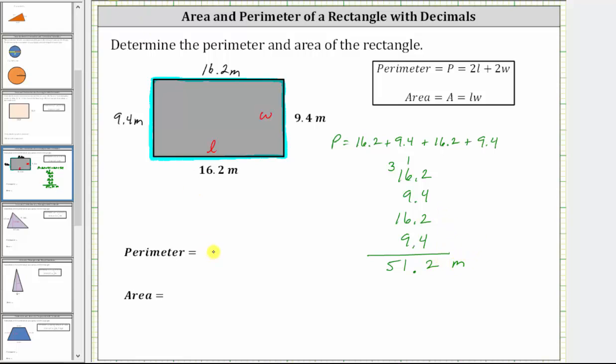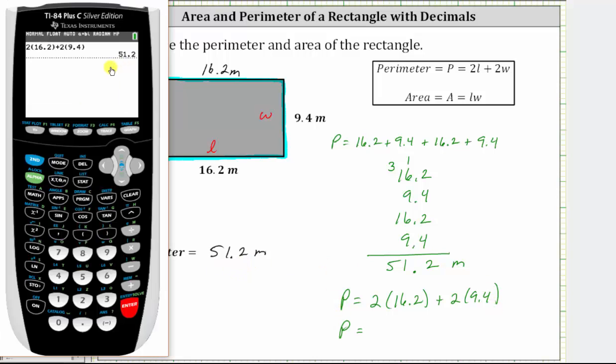Let's go ahead and record this. Now if we did want to use the formula, we would have the perimeter P is equal to two times the length of 16.2 meters plus two times the width of 9.4 meters. Let's check this on the calculator to make sure we do get 51.2. And notice how we do, which does verify the perimeter is correct.